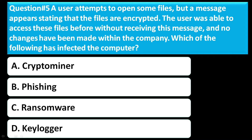Question number five: A user attempts to open some files but a message appears stating that the files are encrypted. The user was able to access these files before without receiving this message, and no changes have been made within the company. Which of the following has infected the computer? Option A is a crypto miner. Option B is phishing. Option C is ransomware. Option D is a keylogger. The correct answer is C, ransomware.